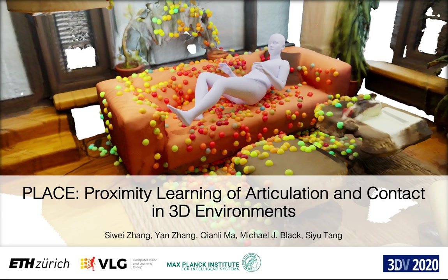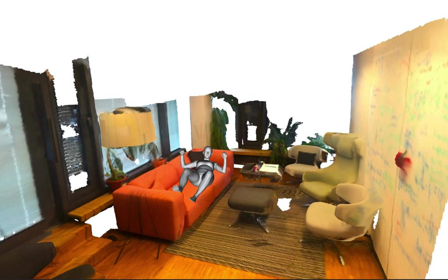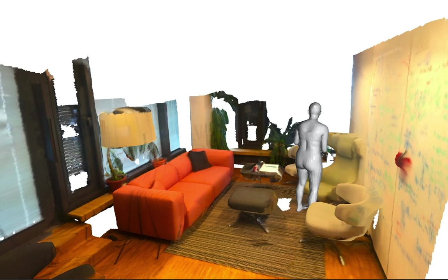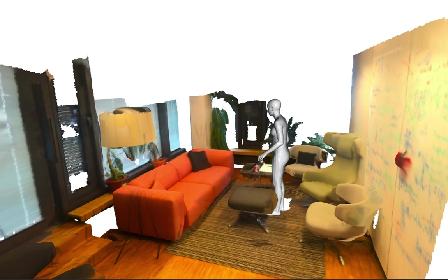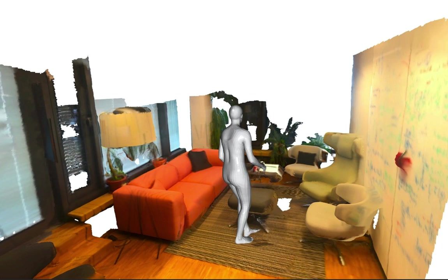In this work, we present a novel proximity representation to generate person-scene interactions in 3D environments. Given a 3D scene mesh, our method aims to generate natural human-scene interaction relationships and infers plausible and realistic human bodies based on that.